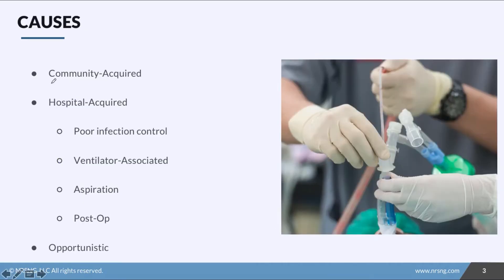We can also classify pneumonia by how the patient contracted it. There's community-acquired pneumonia, where the patient contracts it from someone out in the community — maybe someone came to work with pneumonia, or somebody dropped their child off at daycare who had pneumonia. It's acquired out in the community.